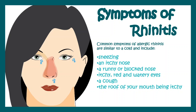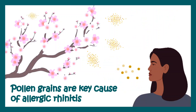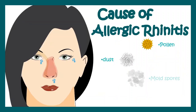One thing to be noticed is that the fluid that comes out from the nose is actually totally clear. The key cause of allergic rhinitis is pollen grains from several flowers and trees, and this is kind of seasonal. Other causative agents include dust, mold spores, dust mites, animal hair, etc.